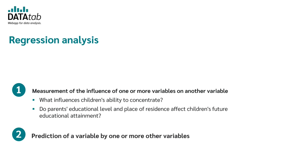The second area — using regression for predictions — is more application-oriented. For example, to optimize hospital occupancy, you might want to predict how long a patient will stay in the hospital based on characteristics such as age, reason for stay, and pre-existing conditions. Based on this prediction, planning can then be optimized.